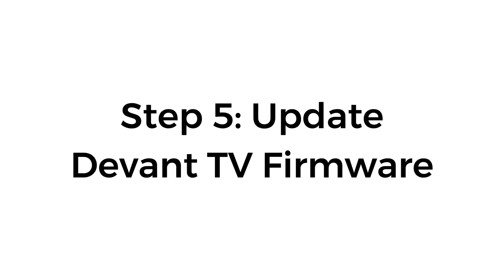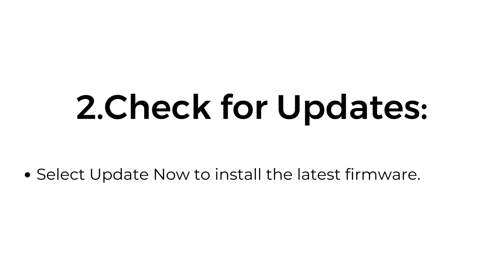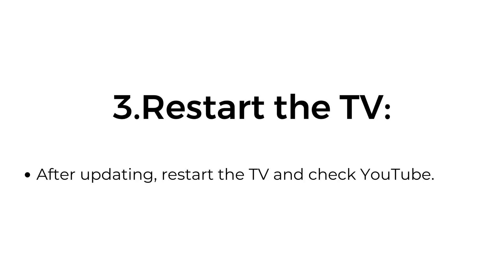Step 5: Update Devant TV Firmware. Go to Settings > About TV > Software Update. Check for updates and select Update Now to install the latest firmware. After updating, restart the TV and check YouTube.